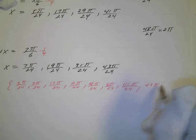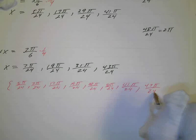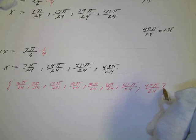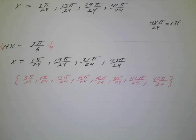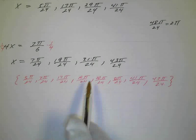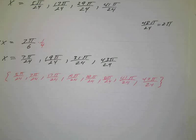And the last one is 43π over 24. And that's a bunch. 5, 7, 17, 19, 29, 31, 41, 43π all over 24. Okay, so those are your 8 solutions.